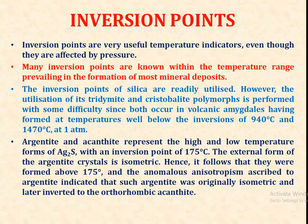Argentite and acanthite represent high and low temperature forms of silver sulphide, with an inversion point of 175 degrees Celsius. The external form of argentite crystal is isometric; hence it follows that they were formed above 175 degrees Celsius. The anomalous anisotropism ascribed to argentite indicates that such argentite was originally isometric and later inverted to the orthorhombic acanthite.